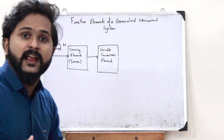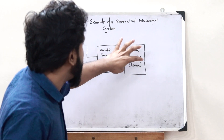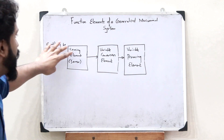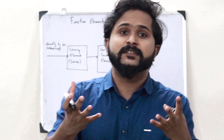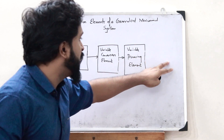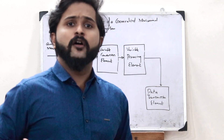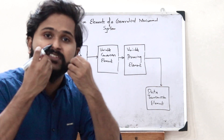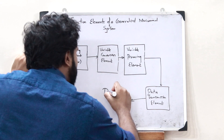Whatever variable is converted here must be processed. Therefore, there is a variable processing element. After the variable processing, this element will deduce the measured value of the quantity. Our next aim is to show the user the measured quantity. For that, this is passed to a data transmission element. With this data transmission element, we can connect a display device like a monitor or, in the case of a car, a speedometer. This is then connected to a data presentation element.